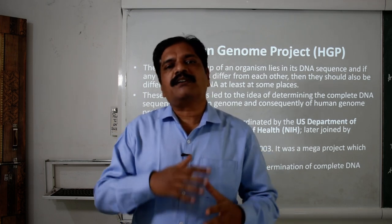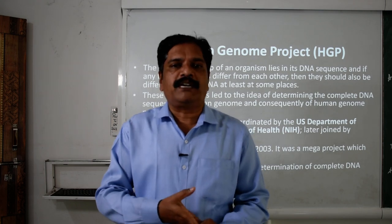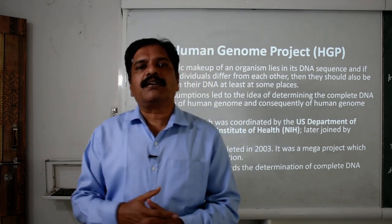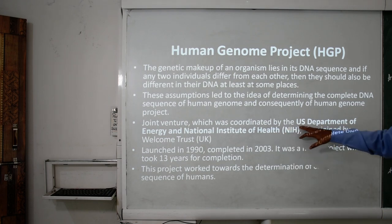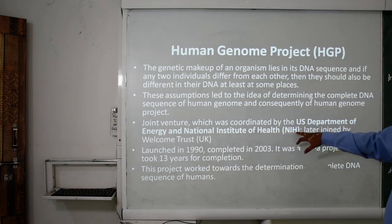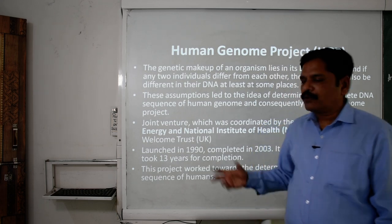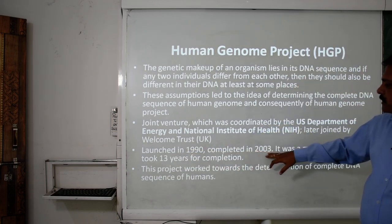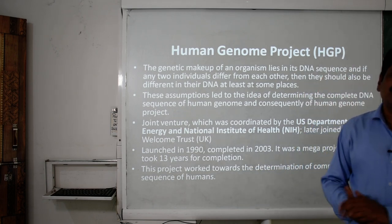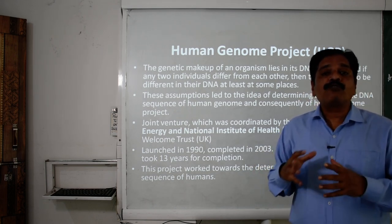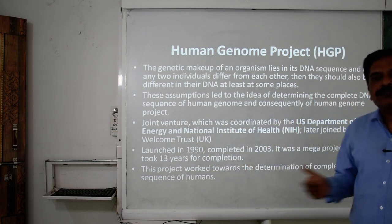The genome project is an attempt by scientists to identify the specific series of nucleotides — we call it genome sequencing. It was a joint venture coordinated by the US Department of Energy and the National Institute of Health (NIH), and later joined by the Wellcome Trust of the United Kingdom. It was launched in 1990 and completed in 2003 — a mega project that took 13 years for completion.